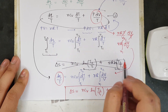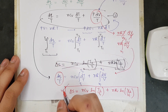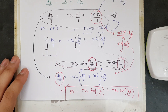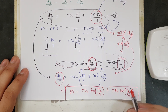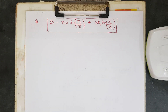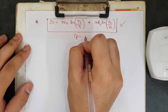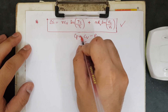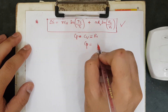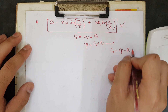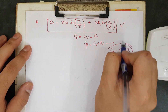This two-variable form in temperature and volume is more helpful for deriving thermodynamic processes. We also know that CP minus CV equals R, so CV equals CP minus R. We shall substitute this into the equation.